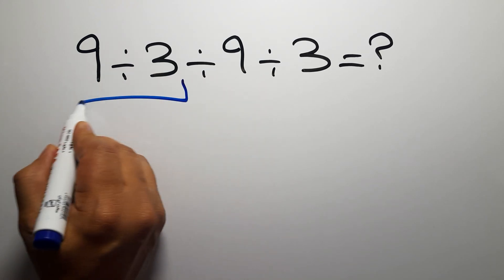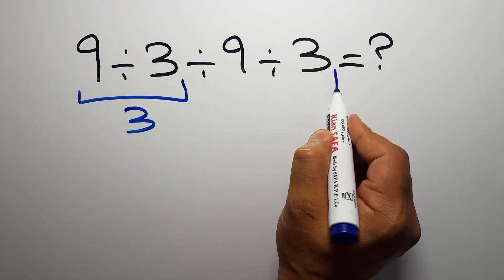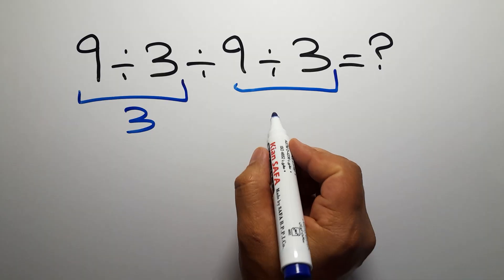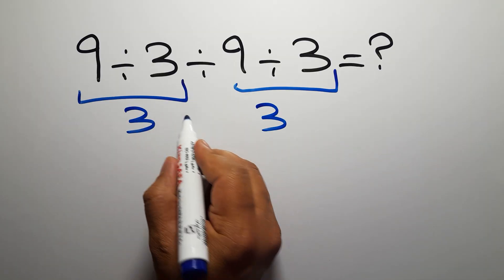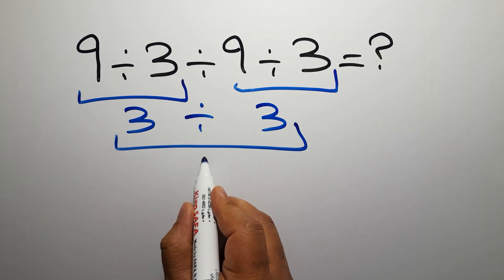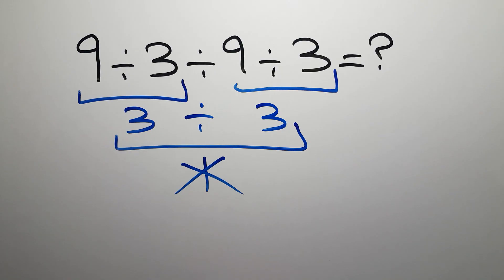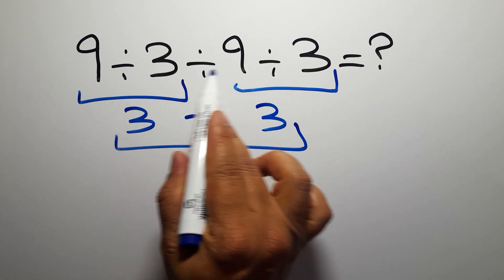9 divided by 3 gives us 3, and again here we have 9 divided by 3, so 3 divided by 3, which gives us just 1. But this answer is not correct because when we have more than one division in an expression, we have to work from left to right.